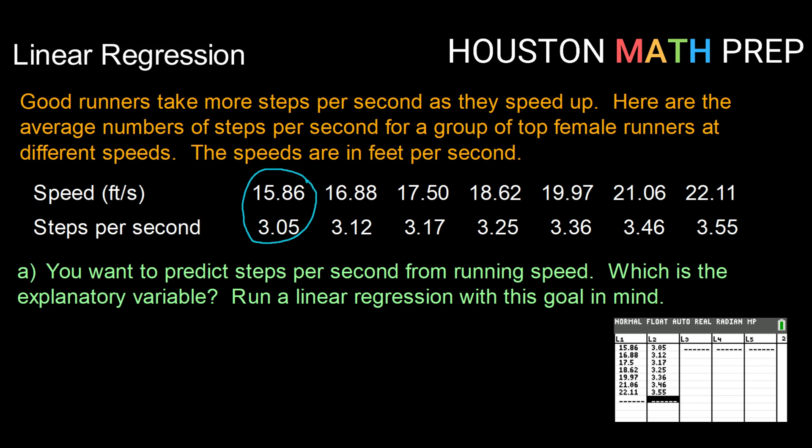Each speed in feet per second is related to a coordinated steps per second. So what you can see here is this pair. This is one runner who was running at 15.86 feet per second and they were taking 3.05 steps per second. And we've got seven pairs that way.